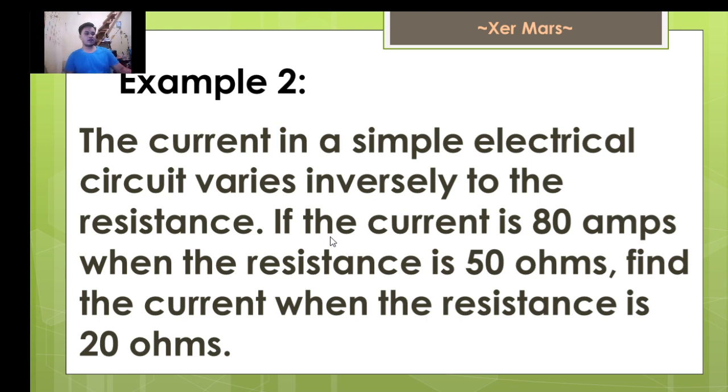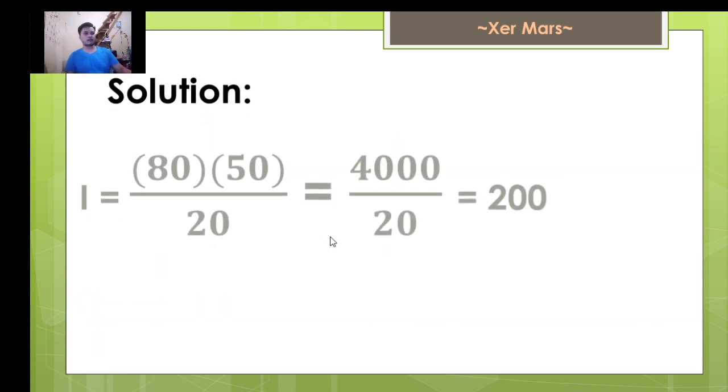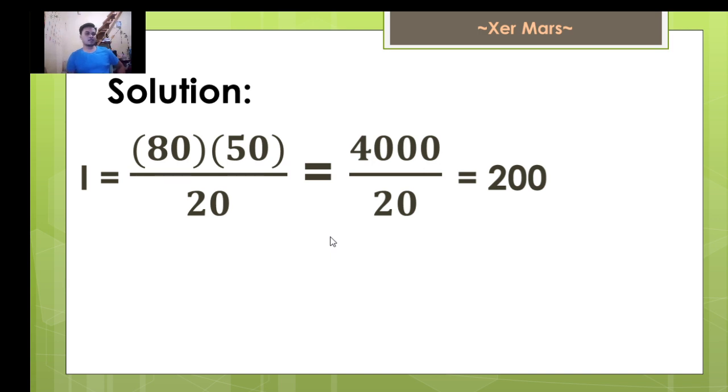Applying the shortcut again, we have the solution: I equals 80 times 50 over 20 equals 4000 over 20. And that is equal to 200. But go back to our solution first. 80 times 50 over 20. We can divide first. 80 divide 20 and that is equal to 4 times 50. That is 200. So we arrive the same answer.